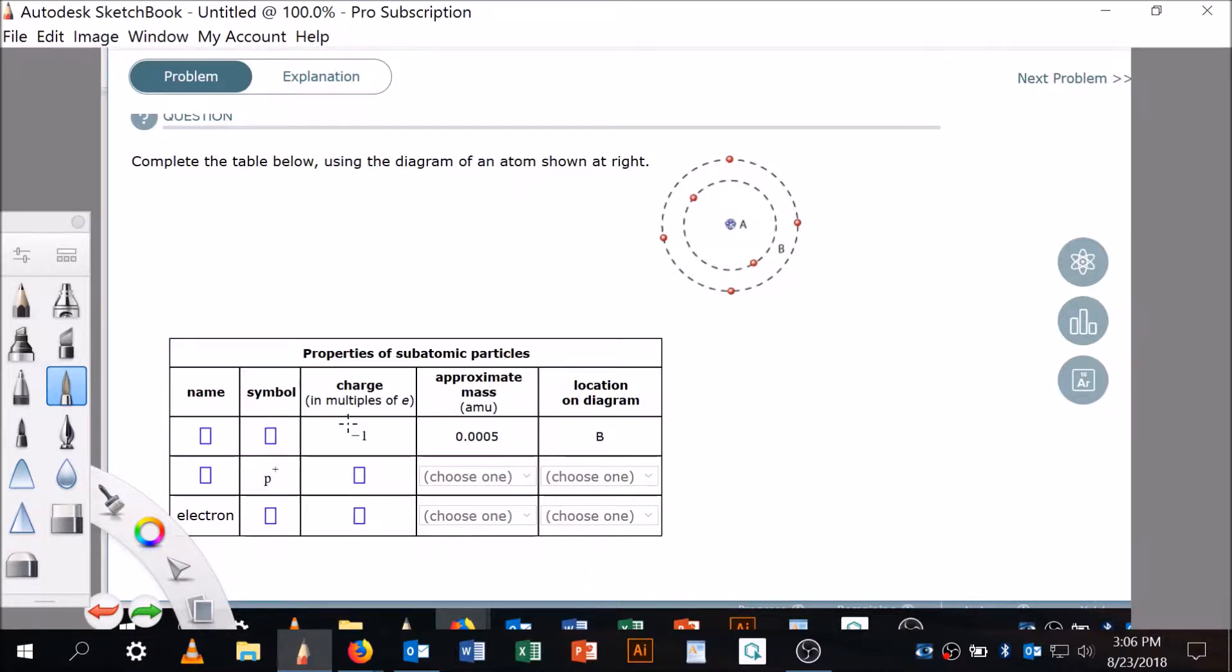If we have a charge of minus one, that's what we would expect for the electrons. And sure enough, it's in area B. Do you see that right there? B, okay? So what's the symbol? Well, the symbol is going to be the symbol for an electron, which if you click the explanation, it's going to tell you that the symbol for the electron is that, okay? And the name, of course, is electron, okay? So that is, let's say that's answer one. This is answer one. Here's the answer two. Here's the answer two, okay?